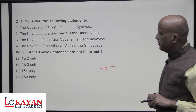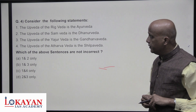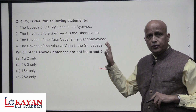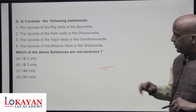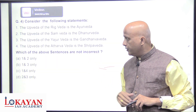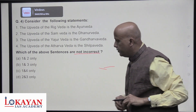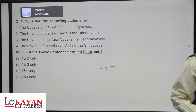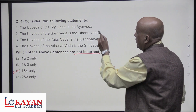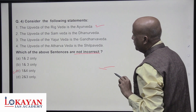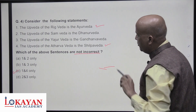Consider the following statements about Upavedas. The Vedas are also associated with Upavedas connected to one or another major Veda. Which of the following is not incorrect? The answer is C — one and four only. Technically, Ayurveda is the Upaveda of the Rigveda, and the statement that Shilpaveda is the Upaveda of Atharvaveda is not correct. The remaining two are correct.